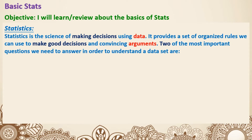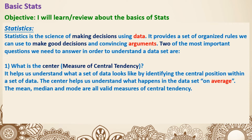Moving on to some more definitions. Statistics is the science of making decisions using data. It provides a set of organized rules we can use to make good decisions and convincing arguments. Two of the most important questions we need to answer in order to understand a dataset are: first, what is the center — or in other words, the measure of central tendency. It helps us understand what a set of data looks like by identifying the central position. The mean, median, and mode are all valid measures of central tendency.